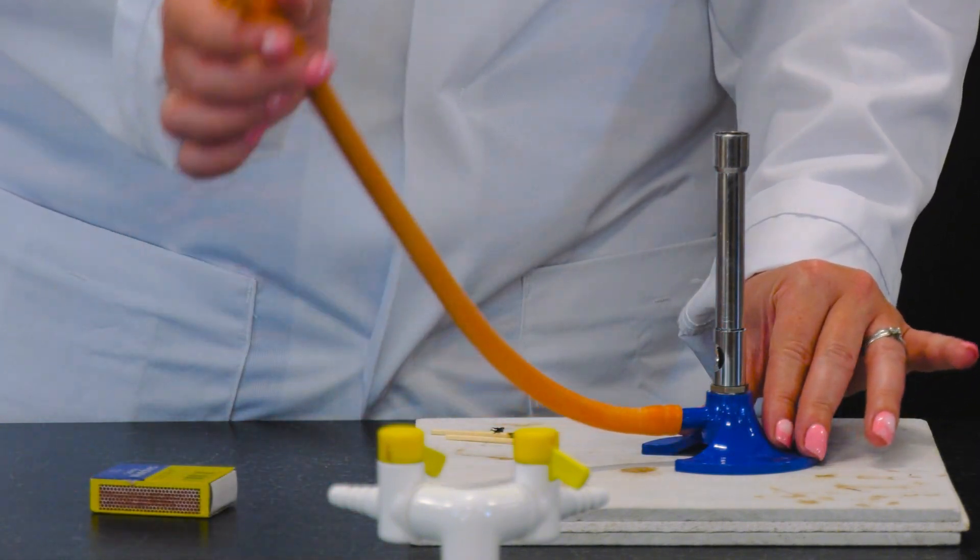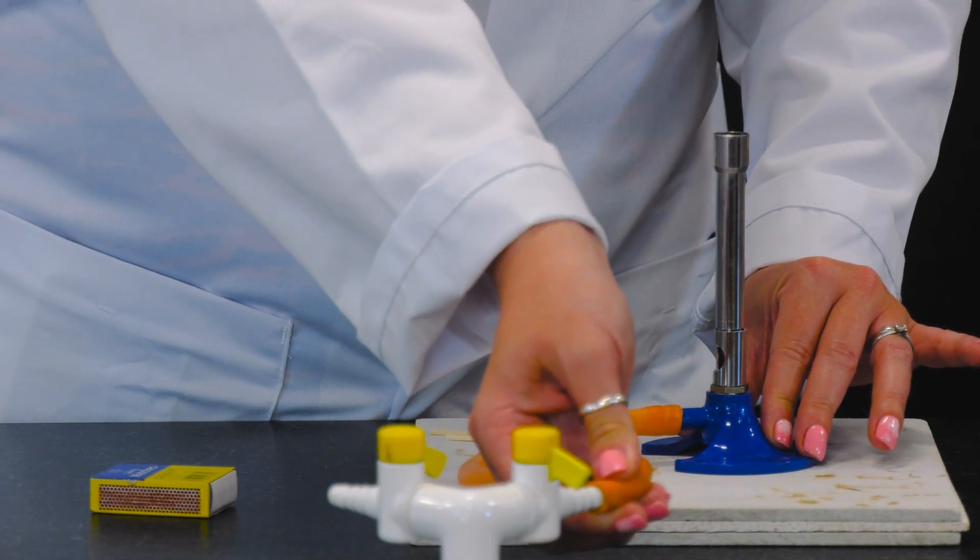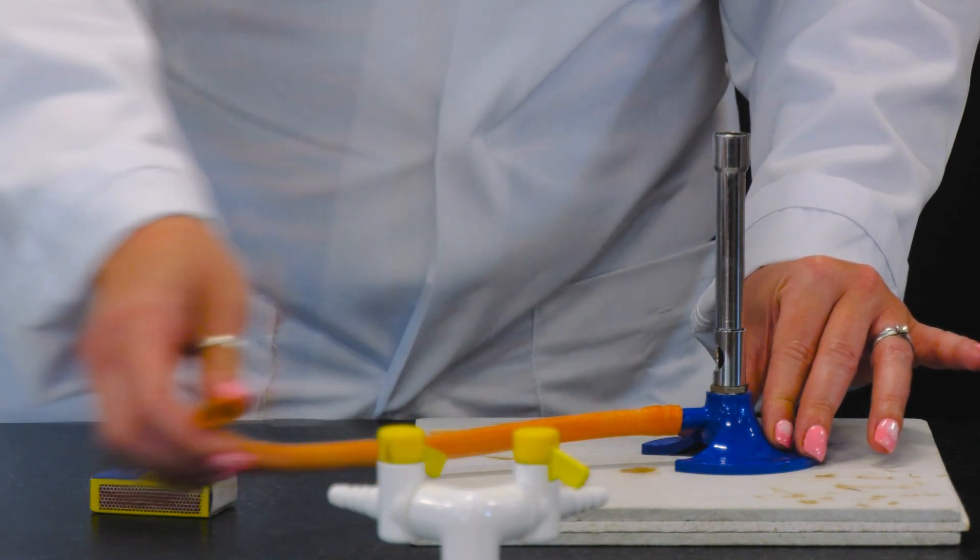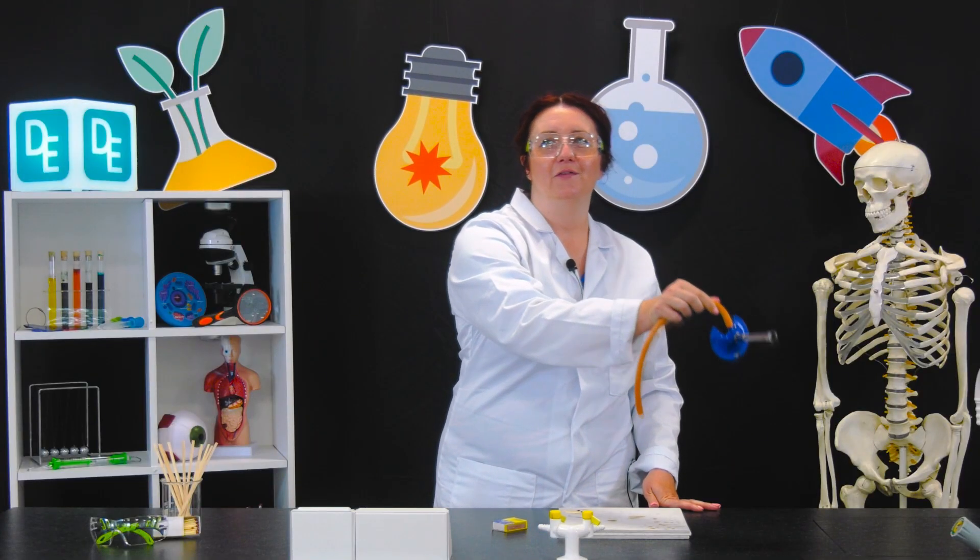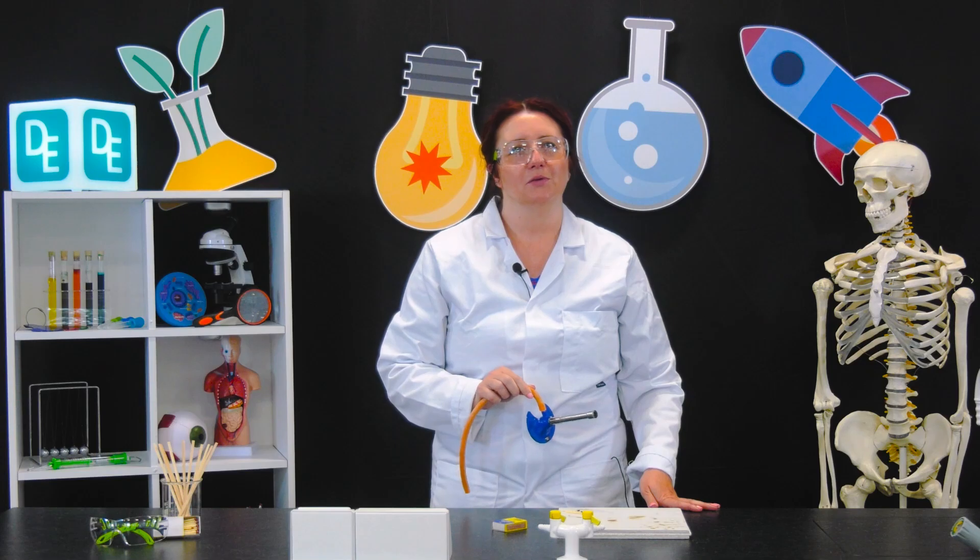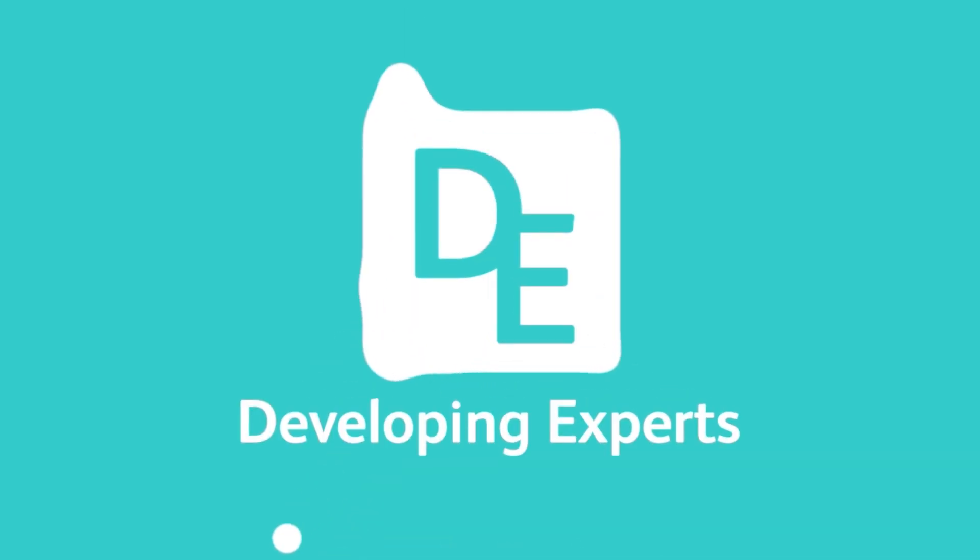Take off the rubber tube from the gas tap. You can hold it by the rubber tubing and put it safely back in the box where you got it from. You'll find inspiring lessons, ideas, and planning at DevelopingExperts.com.